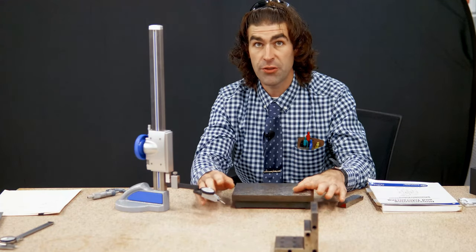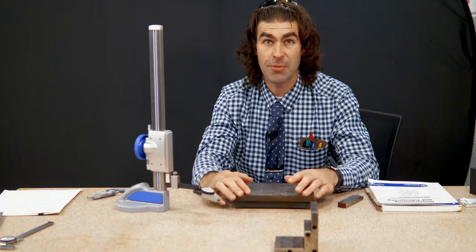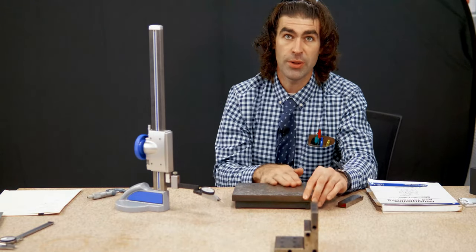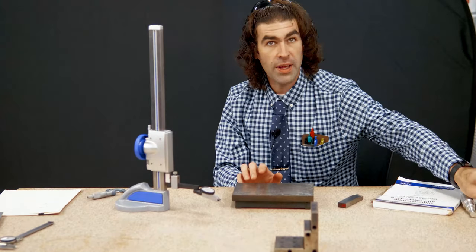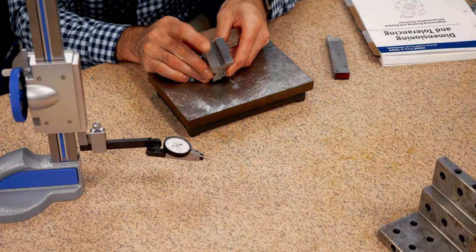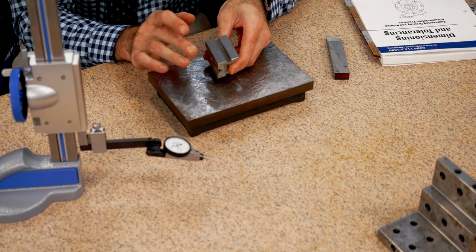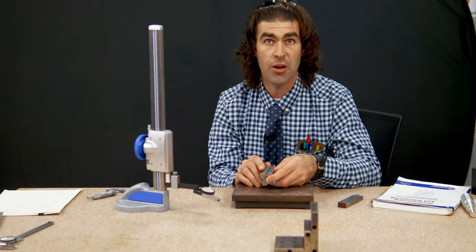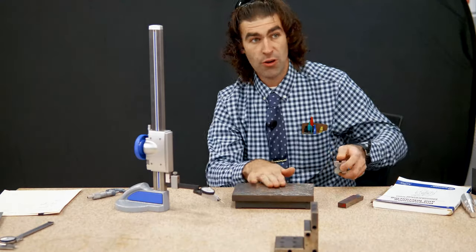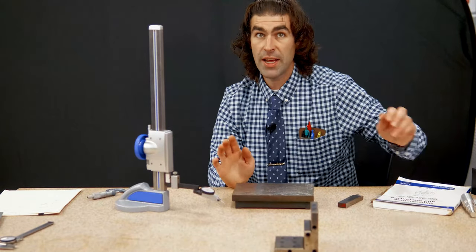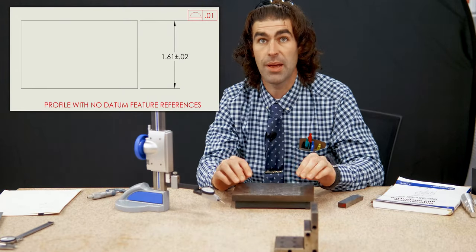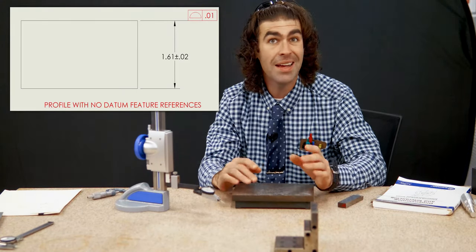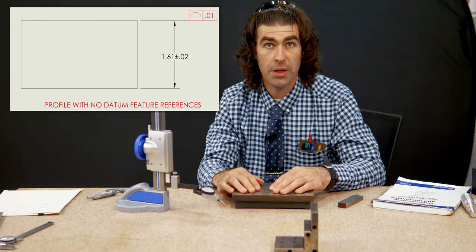Next up is profile without a datum reference — this is just a flatness check; it does the exact same thing as flatness with one continuous surface. Now, if you had two surfaces, say a part that has two coplanar surfaces, that profile would do something different — I have a whole video about that. But for one surface, profile with no datum feature reference is checked the exact same as flatness.